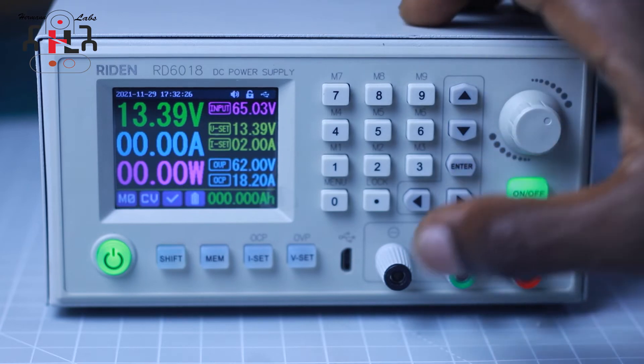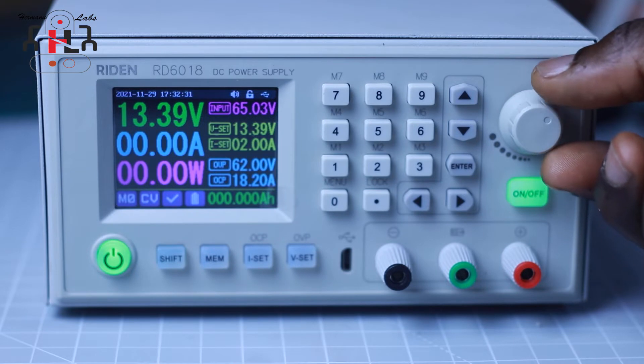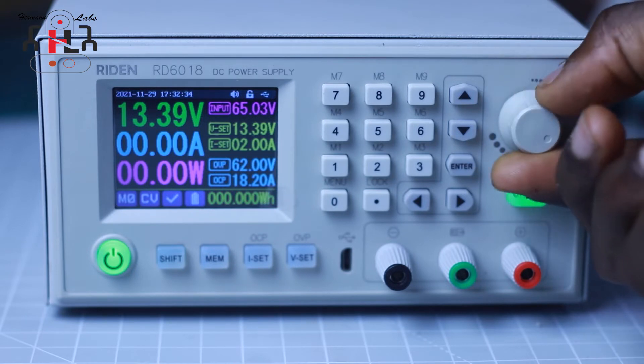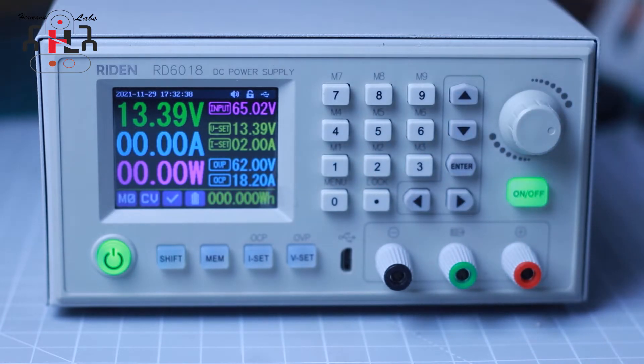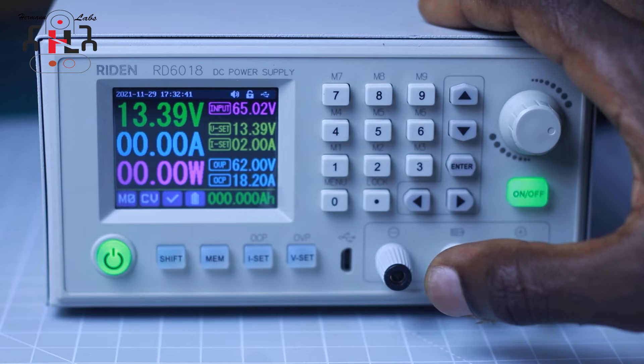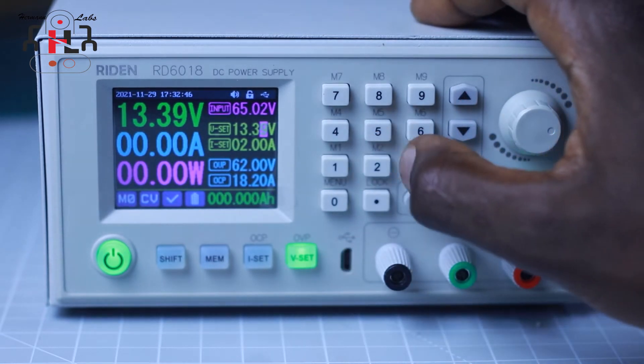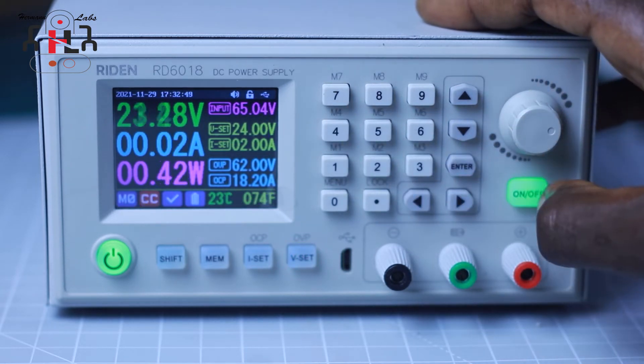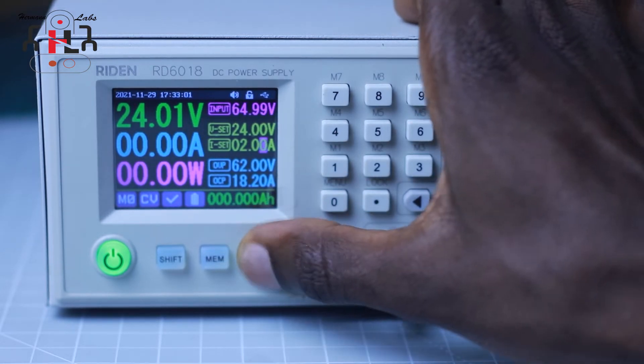To set voltage on the power supply, we have two options to choose from. It is either we use the rotary knob or we use the keypad. Let's set the voltage on the power supply using the keypad. To do that, we press on the button V-set and we use the numbers to set the voltage we desire to obtain. After the voltage is set, we press on the button ON-OFF to activate the output and make it available. The same process is followed when setting the current.